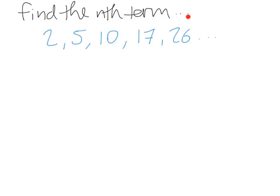We want to find the nth term of this sequence: 2, 5, 10, 17, 26... When we're given a sequence, we don't know straight away if it's quadratic, linear, or something else. We have to start off by having a look at the first difference between each term.